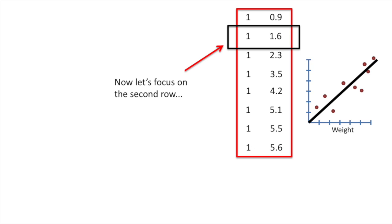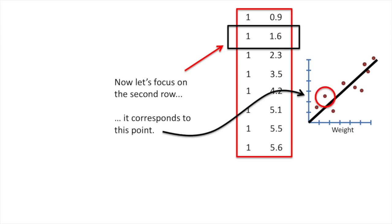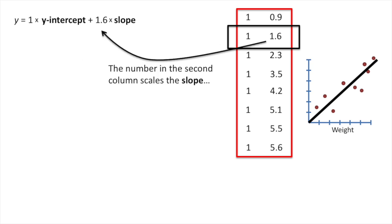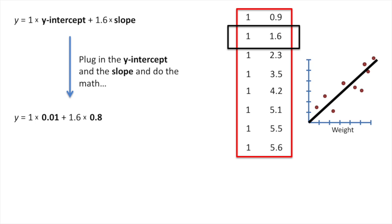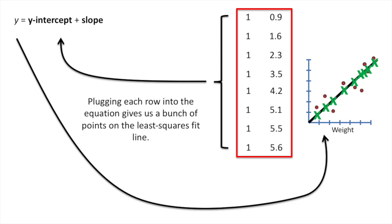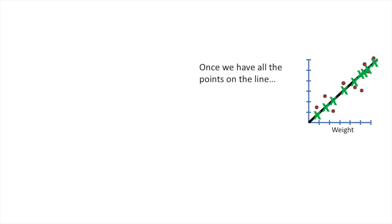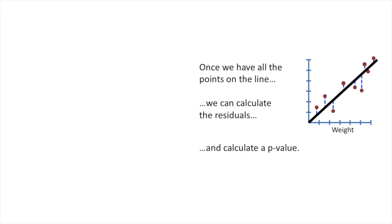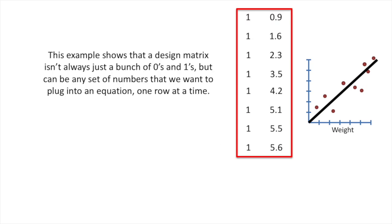Now let's focus on the second row, which corresponds to another data point. The number in the first column multiplies the y-intercept, and the number in the second column scales the slope. Plugging in the y-intercept and slope gives a point on the line corresponding to the second data point. Plugging each row into the equation gives us a bunch of points on the least squares fit line, from which we can calculate residuals and then a p-value. This shows that a design matrix can be any set of numbers we want to plug into an equation one row at a time.